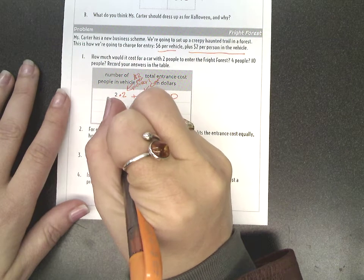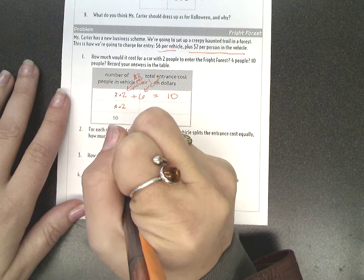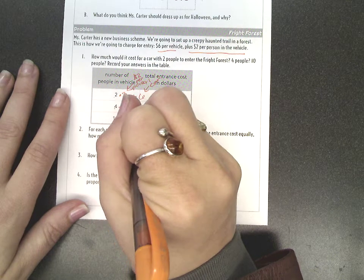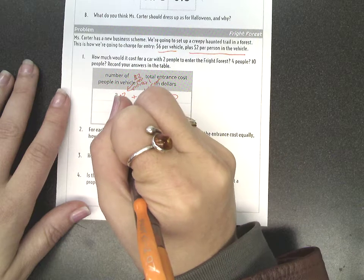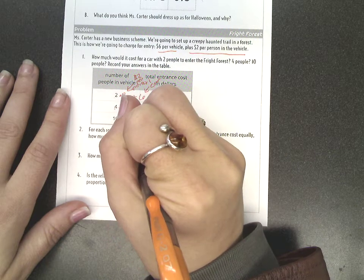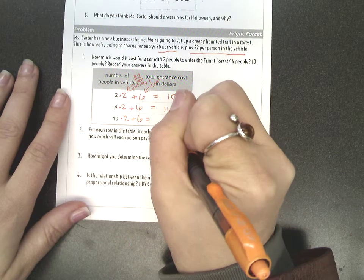So if it's again $2 per person, but this time times four, we'll have $8 plus $6 for the car, it's going to be $14. And if it's $2 per person and there are 10, we'll have $20 plus $6 for the car, $26.